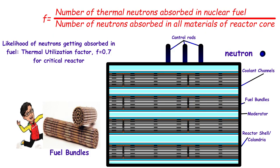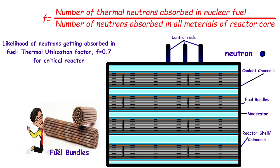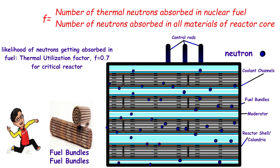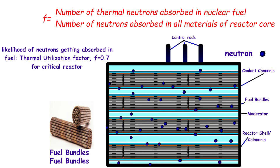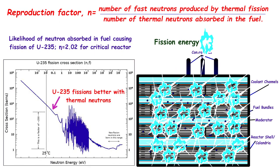However, if you are a disciplined neutron, you will go and get absorbed by fuel and not get lost in the core. This is given by the fifth factor, thermal utilization factor.